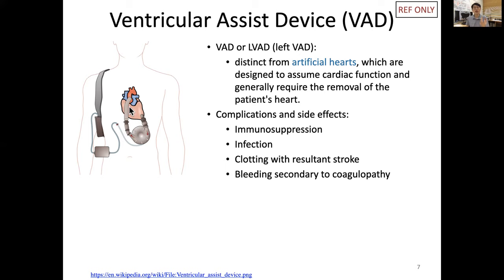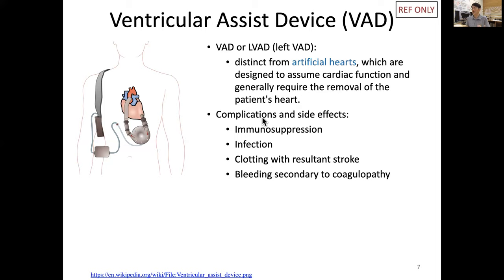Another complication: the device directly contacts the blood system. Blood normally flows over an endothelial layer, so with this different surface there is a higher risk of clotting. These clots can form and shed to the brain, causing more frequent strokes. Because of this, patients may need anticoagulant treatment, which reduces blood clotting but leads to coagulopathy and increased bleeding risk.